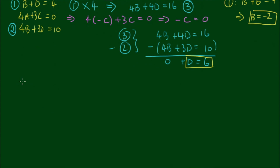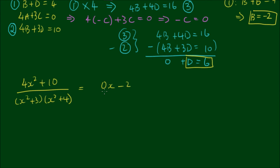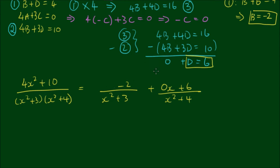So (4x² + 10) divided by (x² + 3)(x² + 4) equals (0x − 2)/(x² + 3) + (0x + 6)/(x² + 4), which simplifies to −2/(x² + 3) + 6/(x² + 4).